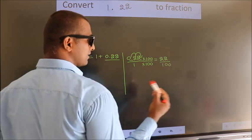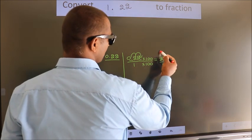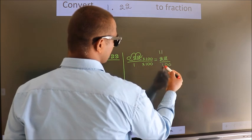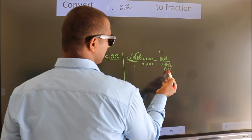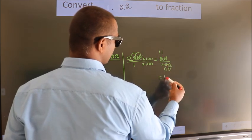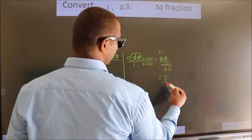Now cancel with 2. 2 goes into 2 once, 2 goes into 2 once, 2 goes into 10 five times. Cannot be simplified further. So the fraction is 11 by 50.